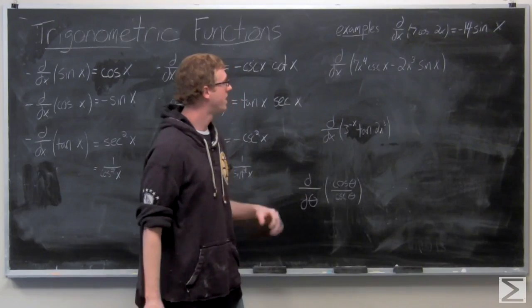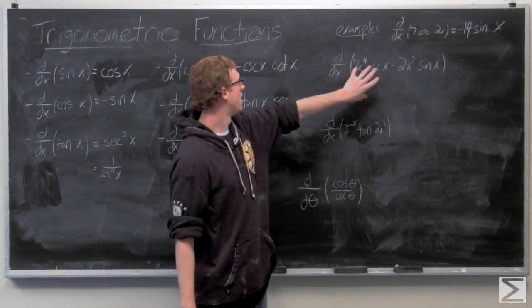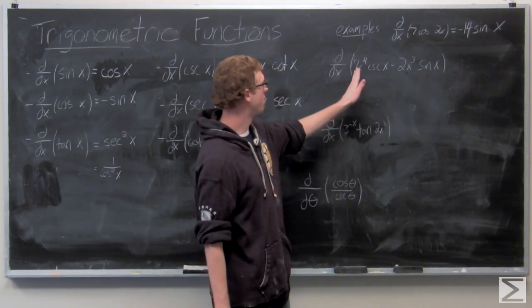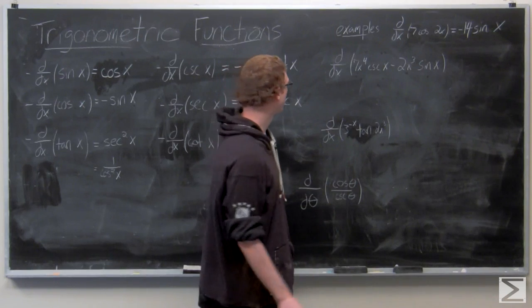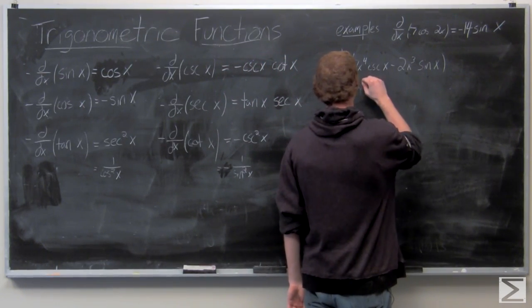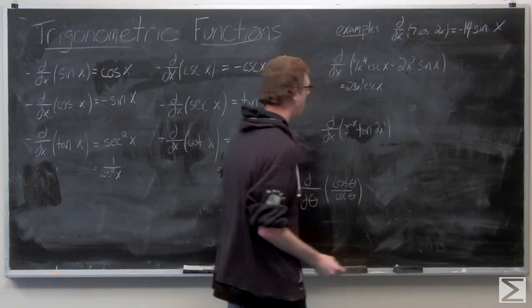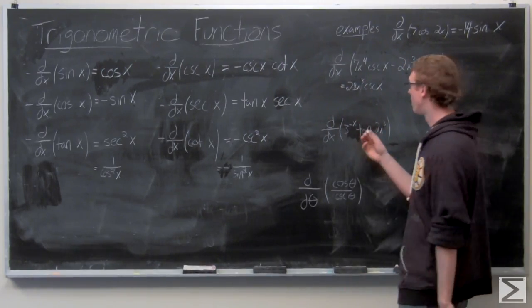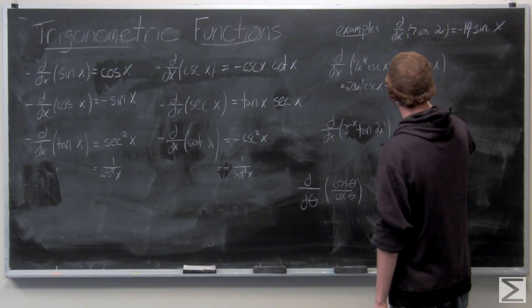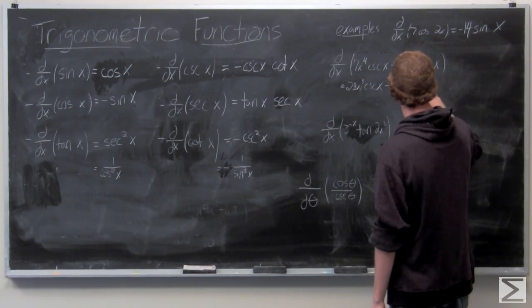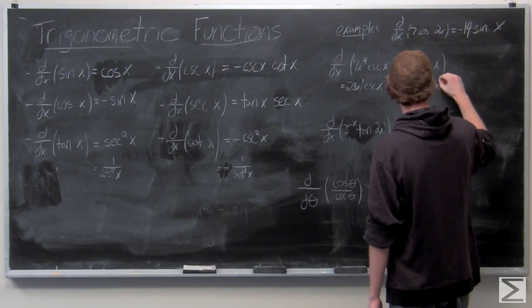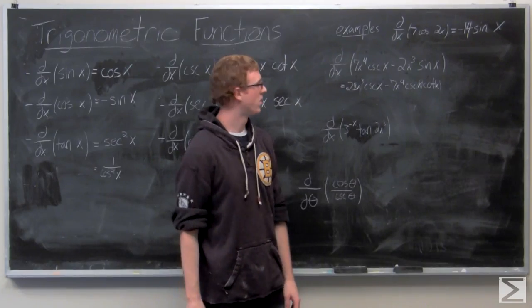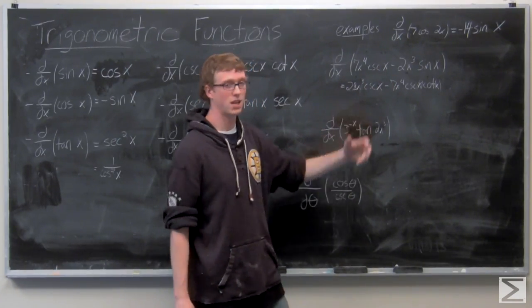This next function looks a bit more intimidating. We need to break it up using the product rule because we have multiple terms. First, we take the derivative of 7X to the fourth times cosecant, and then 7X to the fourth times the derivative of cosecant — changing the sign immediately since cosecant's derivative is negative. Then we apply the chain rule: taking the derivative of 2X cubed brings down the 3 and multiplies by 2, giving negative 6X squared.